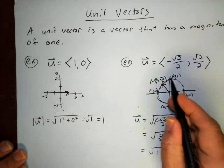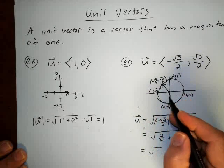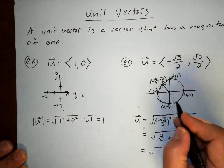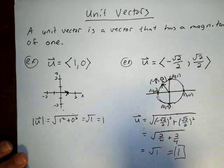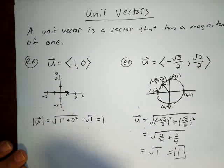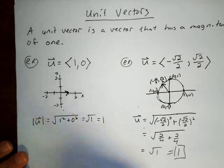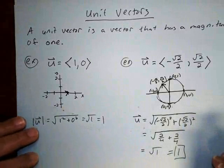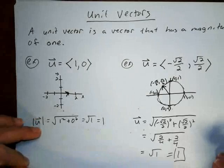Any point on the unit circle is a unit vector — if you go from the origin out to that point, that vector would have a radius of 1. That's a very useful fact that we're going to use in one of the future videos.